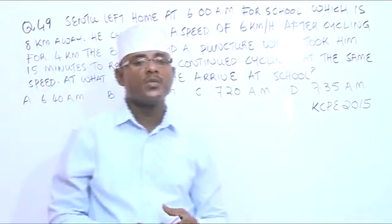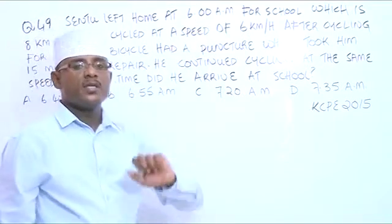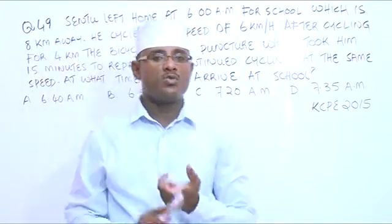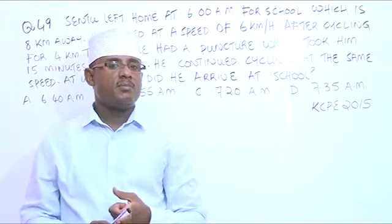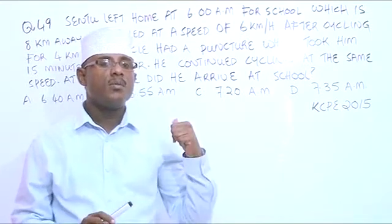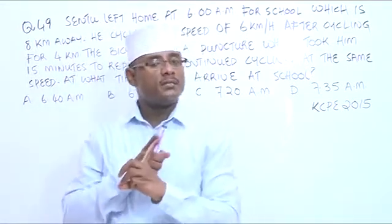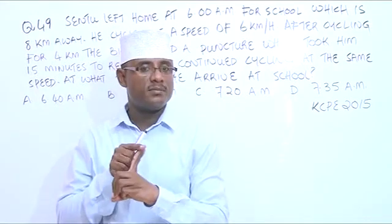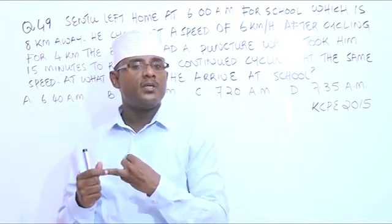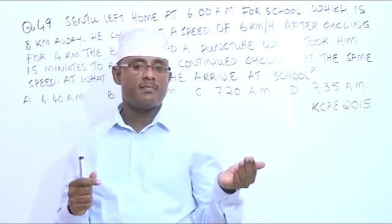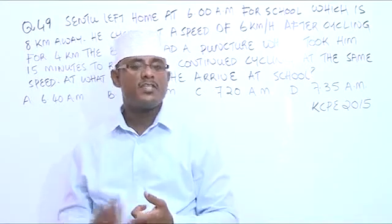At what time did he arrive at school? We have the starting time, which is 6. We are supposed to find the time he reached school, meaning we need to find the finishing time. We need to get the total time taken to travel from home to school. The total time is divided into 3 parts: the initial time before the puncture, the time to repair the puncture, and the time to cover the remaining distance. When we get that total time, we add it to the starting time, and it will give us the finishing time.